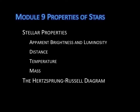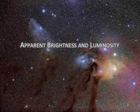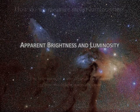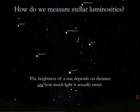This lecture is all about apparent brightness, luminosity, and distance. We'll begin with apparent brightness and luminosity. If you go outside on any clear night, you'll immediately see that some stars are brighter than other stars.